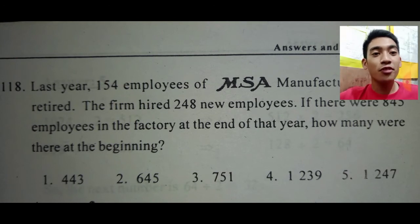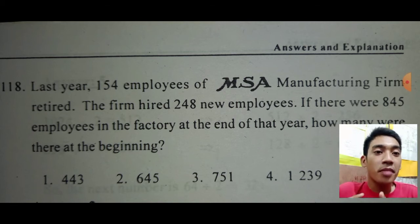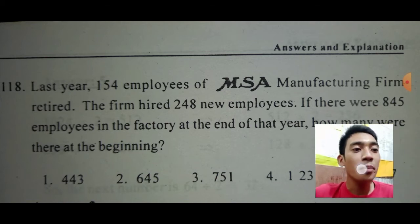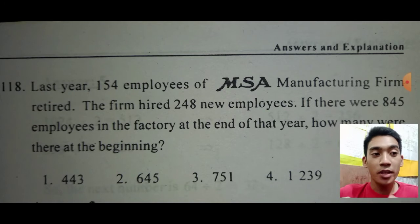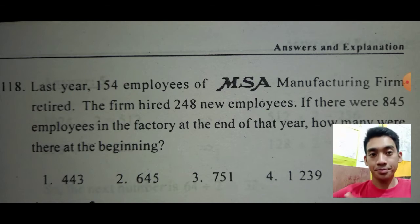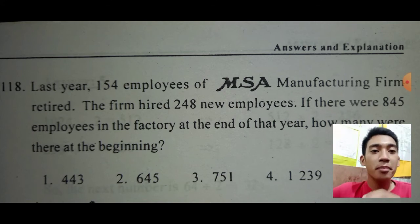Next problem: Last year, 154 employees of MSA Manufacturing Firm retired. The firm hired 248 new employees. If there were 845 employees in the factory at the end of that year, how many were there at the beginning? The given are: 154 employees retired, 248 new employees were hired, and there are more new employees compared to the retiring ones.